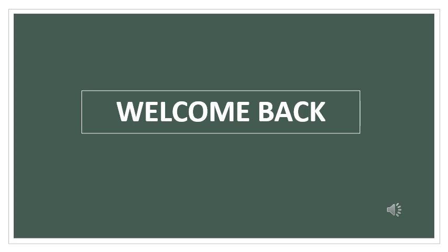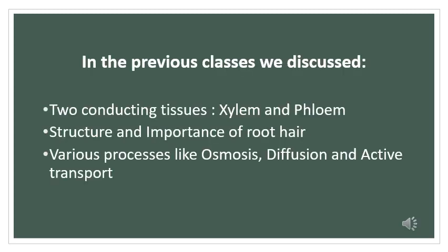Welcome back to biology class. In the previous classes we discussed the importance of root system and the two conducting tissues xylem and phloem. We also know that the root hair present on the roots absorb the water and minerals from the soil and this absorbed water is transported by the xylem to all the parts of the plant. In today's class let's see how this water is absorbed and with the help of which processes water is conducted through the xylem.